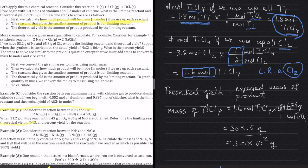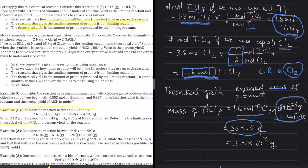Once we identify the limiting reactant, we calculate the theoretical yield — the mass of product we expect to get. We already know we get 1.6 moles of TiCl₄. To get the mass, multiply that by the molar mass of TiCl₄, which is 189.679 grams per mole. Rounded to the correct significant figures, the final answer is 3.0 × 10² grams.